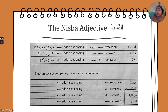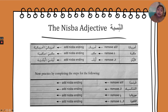Now go ahead and pause the video and do these four examples: Foransa — France; Al-Meksik — Mexico; Muritania — Mauritania; and Al-Qahira — the city Cairo. If you want to say a Cairene — someone who's from Cairo — what would that be? Pause and then unpause when you're ready.